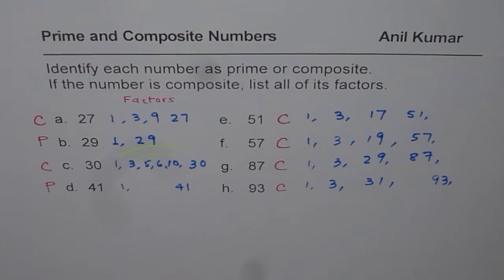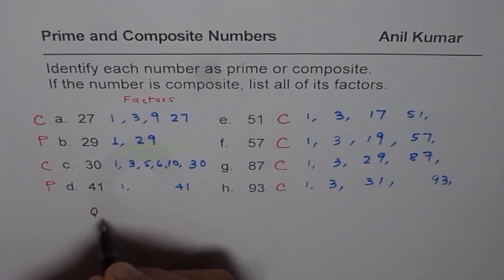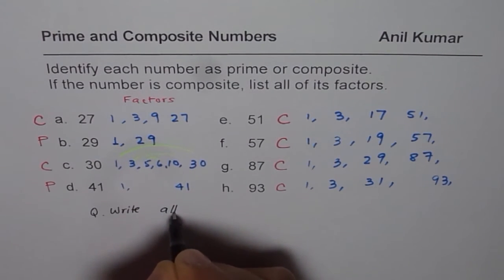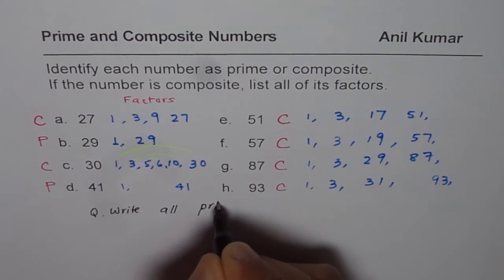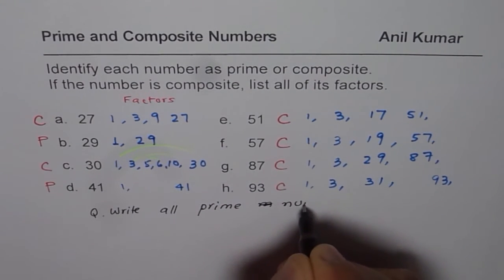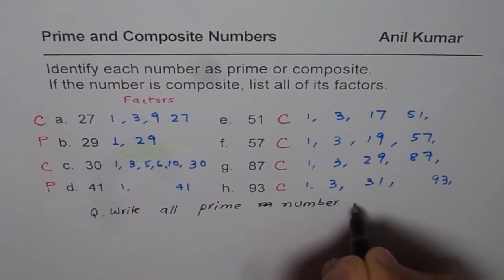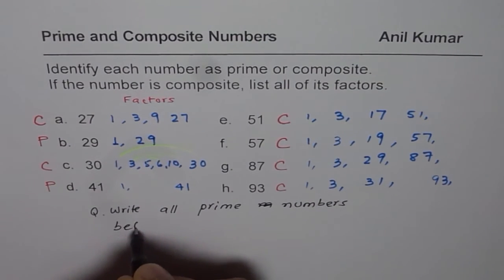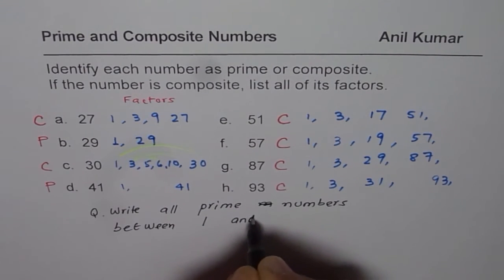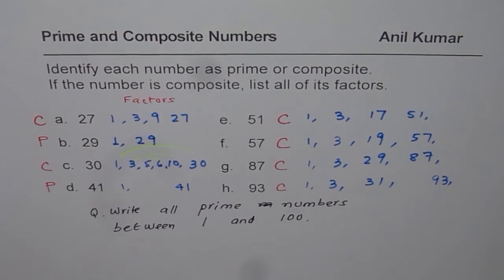Now you understand how to find whether a number is composite or prime. Now as an exercise, what you can do is write all prime numbers between 1 and 100.